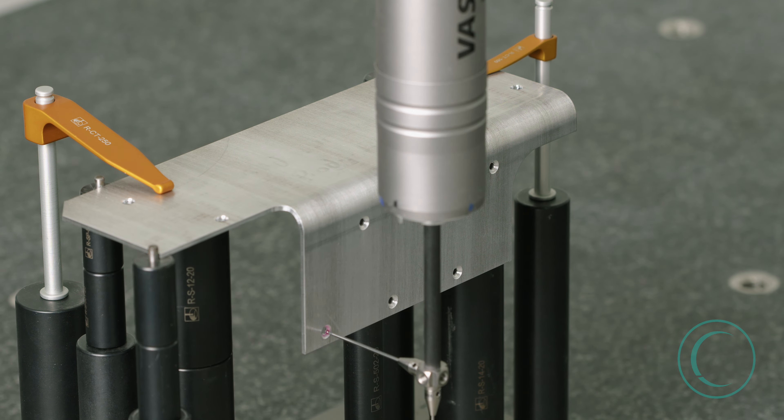Very specifically, this ruby tip probe will take very accurate measurements of these countersinks. It'll go in three circle paths, measuring the different ranges—that's how you measure the countersink.